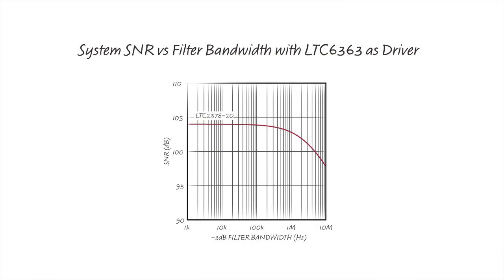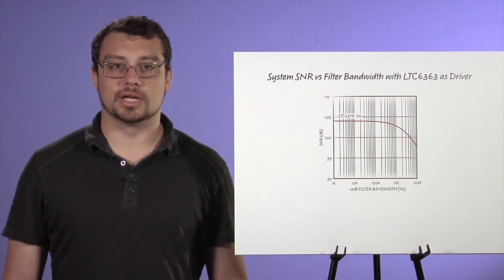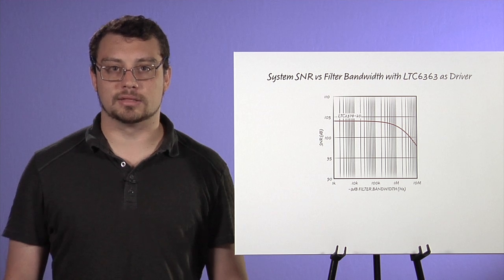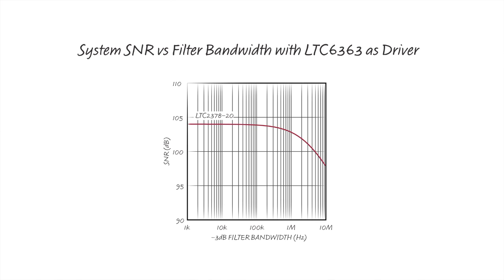The LTC 6363 has 2.9 nV per root hertz of wideband noise. After including the noise of the input and feedback resistors, the overall wideband noise is 10 nV per root hertz. Using the LTC 2378, which has a signal-to-noise ratio specification of 104 dB, comparing this SNR to the driver noise is arbitrary unless we specify the bandwidth of the filter between the driver and the ADC. For example, this is a plot of the system's SNR when the LTC 6363 drives the LTC 2378-20 with a 1K resistor. Even with a 1 MHz RC filter, the SNR only drops by 1.2 dB to 102.8 dB. When the LTC 6363 drives the LTC 2338, the 100 dB SNR drops by only 1 dB to 99 dB at a filter bandwidth of 8 MHz.